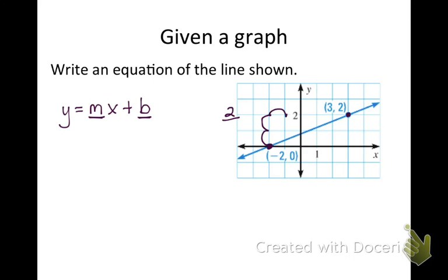and we run one, two, three, four, five. Two over five. And now I'm going to look at my line. I notice that it's going up, so it's a positive line. So I know I'm going to replace m with two fifths.